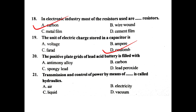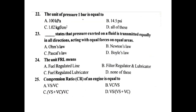The positive plate grid of a lead-acid battery is filled with lead peroxide. The transmission and control of power by means of dash is called hydraulics — transmission and control of power by means of liquid is called hydraulics.